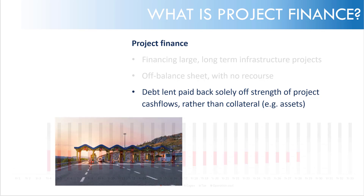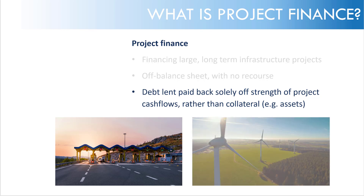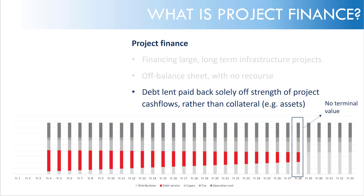Why is this the case? Consider a toll road concession, where the government grants a 30-year concession and then takes over the toll road at the end of that 30 years. It's critical that the cash flows in that 30-year period compensate the sponsor for taking on the risk. Consider a wind farm: at the end of a 25 or 30-year term, perhaps the SPV no longer has access to the land, and so they need to decommission the wind farm. There are really no assets to speak of at the end of the project, and therefore there's no terminal value.